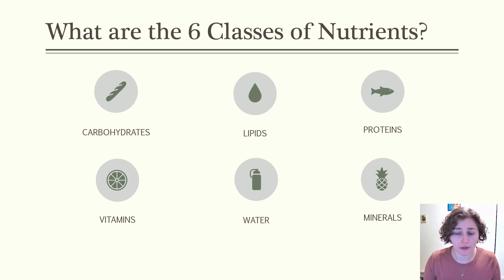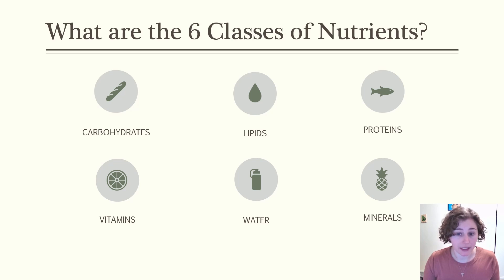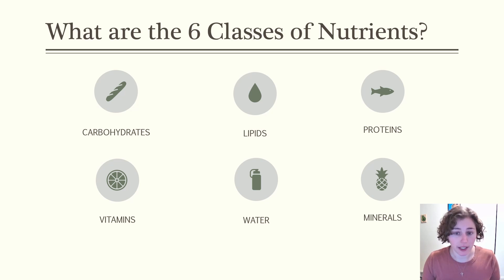Vitamins enable chemical reactions in the body, and minerals play key roles in the nervous system, skeletal system, and water balance. Water is considered an essential nutrient and is needed in the largest quantity. Water plays key roles in the body like regulating body temperature, transporting nutrients to cells, and acting as a lubricant.